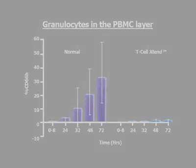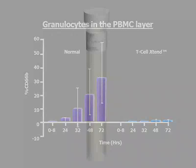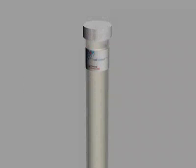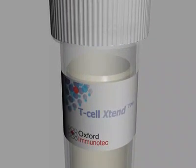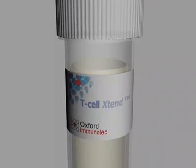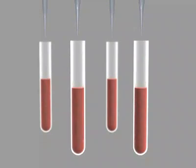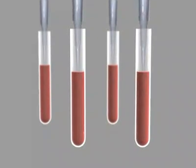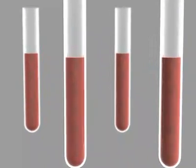Use of T-Cell Extend has been demonstrated to reduce the presence of granulocytes in the PBMC layer, which allows storage times of blood samples for up to 32 hours before performing the T-Spot TB assay. 25 microlitres of T-Cell Extend is added per millilitre of whole blood immediately before commencing the assay.